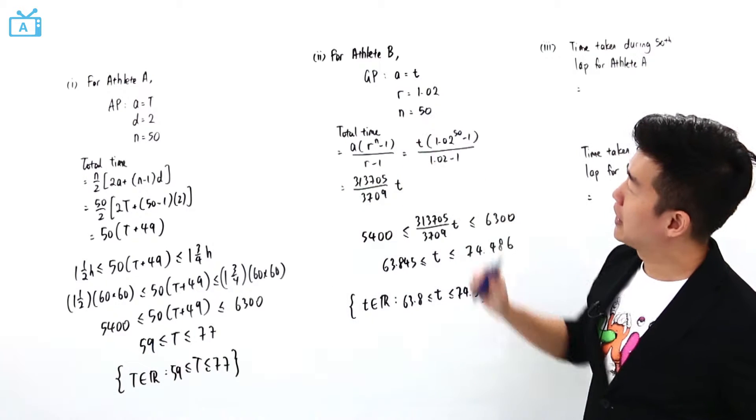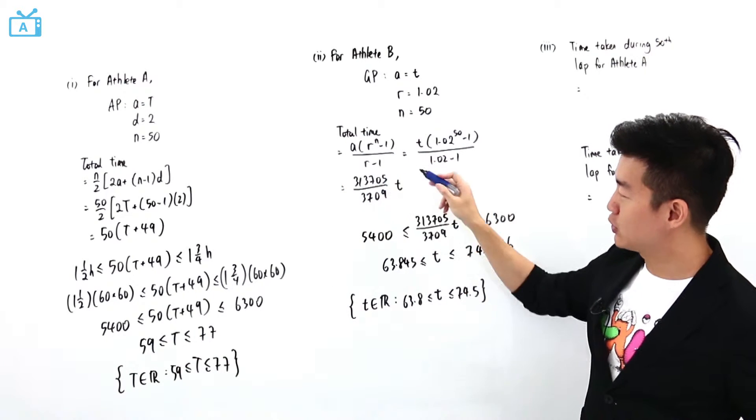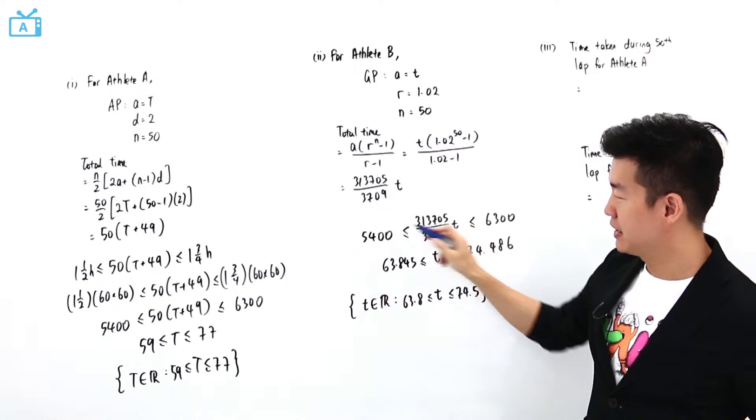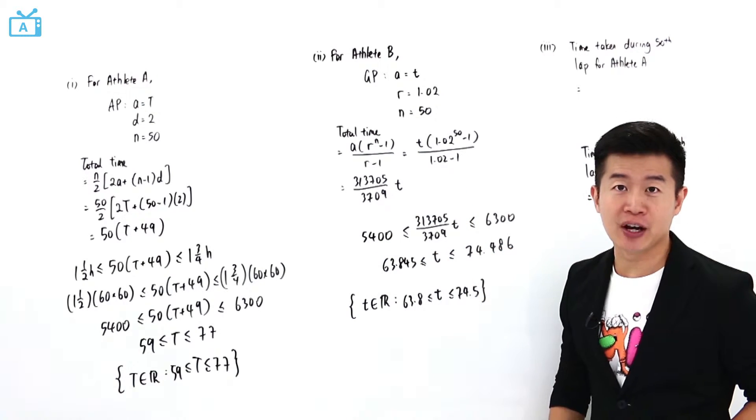As for athlete B, if I match the total time to one and a half hours, T is going to be 63.845.